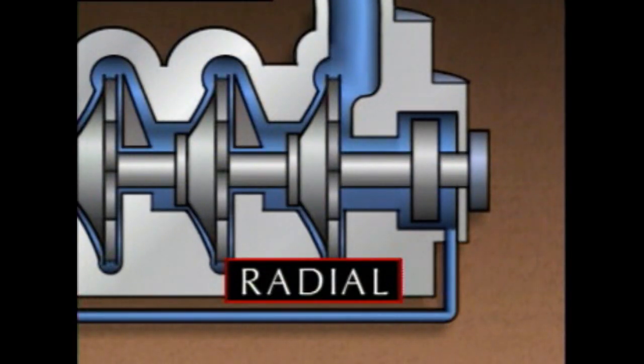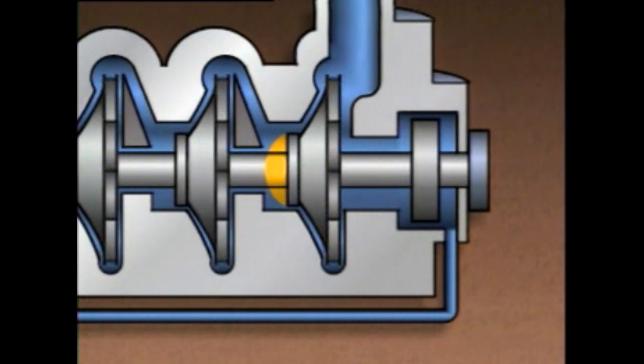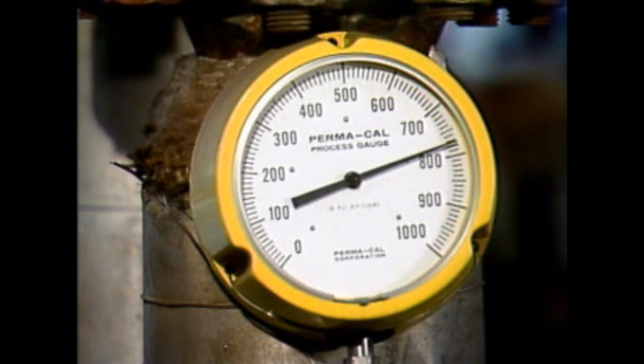One way that centrifugal pumps can be categorized is by the way liquid flows through them. Three common flow path classifications are radial flow, axial flow, and mixed flow. In centrifugal pumps with a radial flow design, the impeller causes the liquid to make a 90-degree turn and flow outward, or radially, from the suction eye to the tips of the vanes. A radial flow pump takes advantage of the maximum amount of centrifugal force the impeller develops. Generally, radial flow pumps are capable of higher discharge pressures, but they don't move as much liquid as other types.